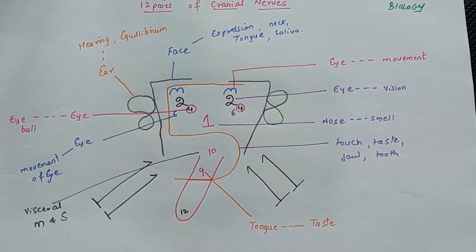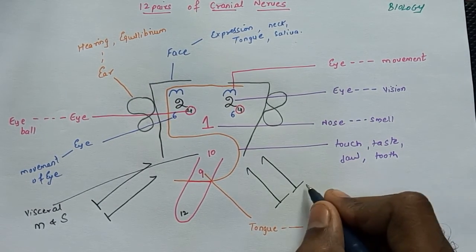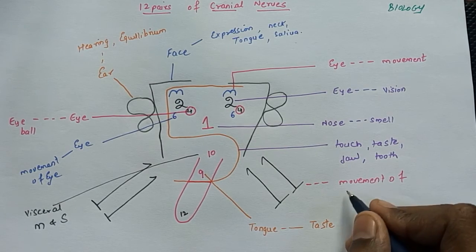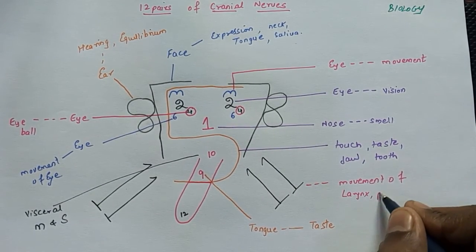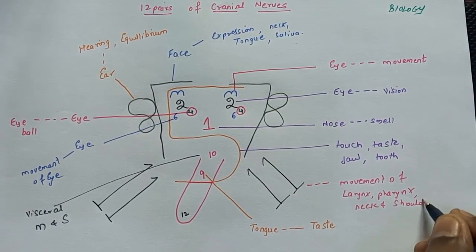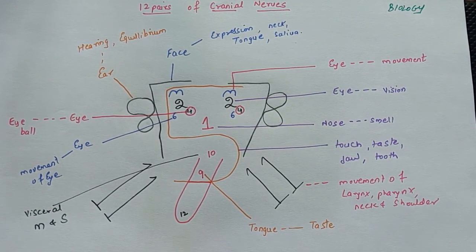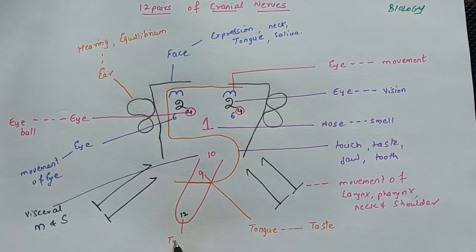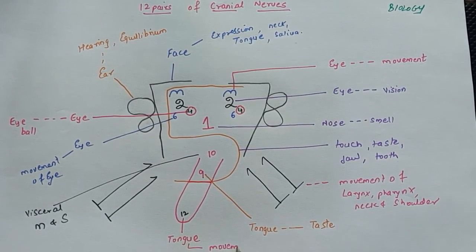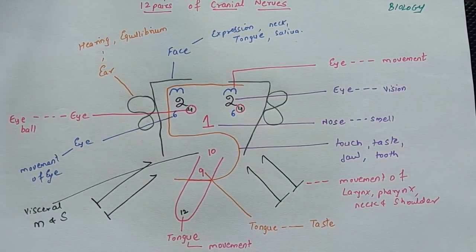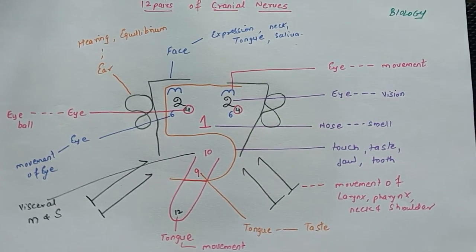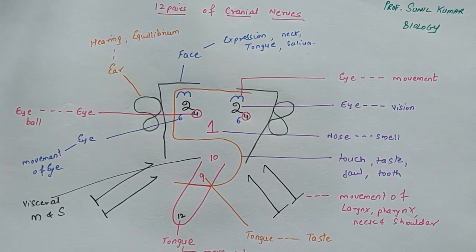Number eleven — the spinal accessory nerve — drawn like the shoulders and arms of the face, is responsible for movement of the larynx, pharynx, neck, and shoulder. Number twelve — the hypoglossal nerve — is at the tip of the tongue and controls movement of the tongue. This is how you can remember the functions of all 12 pairs of cranial nerves. Please subscribe, comment, like, and share — thank you very much!